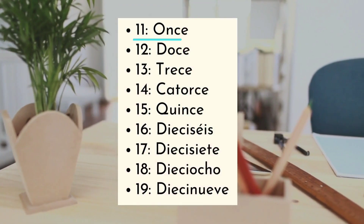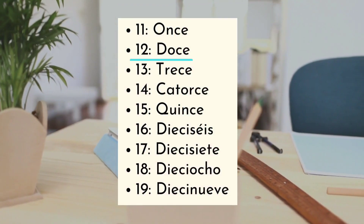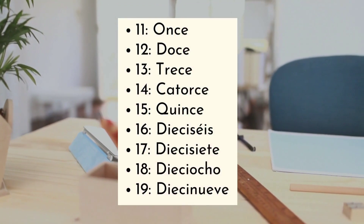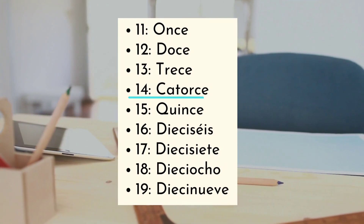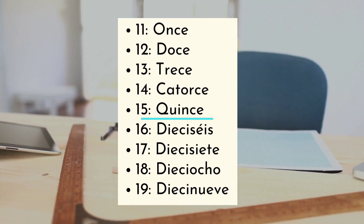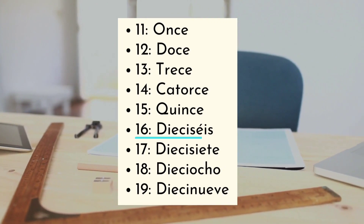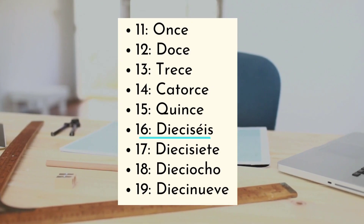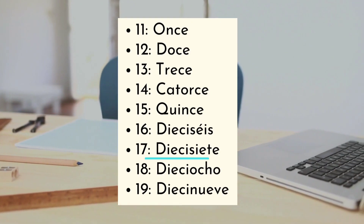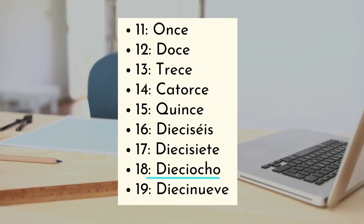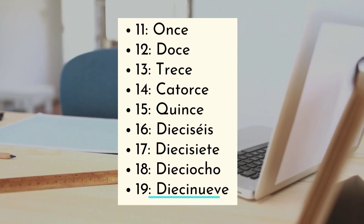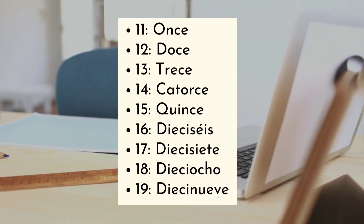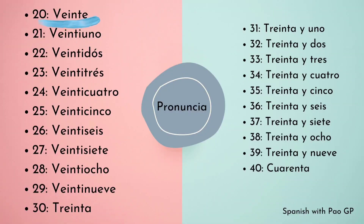Once, doce, trece, catorce, quince, dieciséis, diecisiete, dieciocho y diecinueve. Vamos a ver ahora la estructura del veinte.